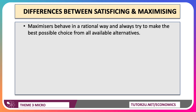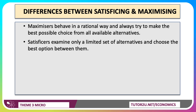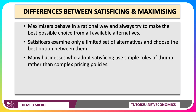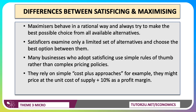Maximisers behave in a rational way — they always try to make the best possible choice from all available alternatives. Satisficers, typically, only examine a limited choice set; they think about two or three alternatives and then choose what they think is the best option between them. Many businesses that adopt satisficing use simple rules of thumb rather than complex pricing algorithms, operating with a limited operational idea.